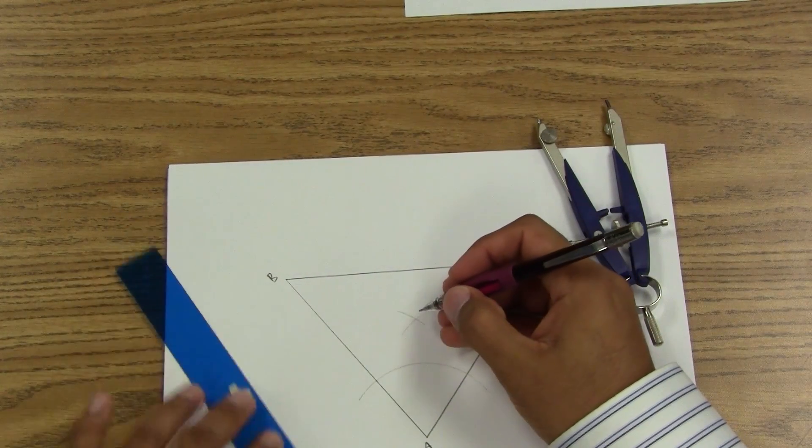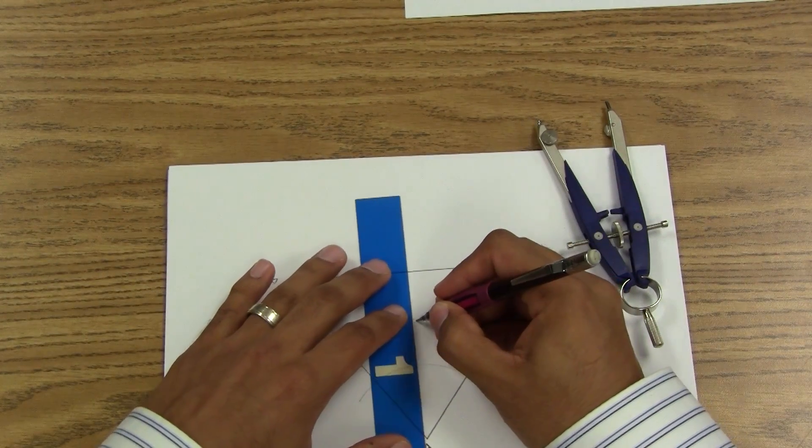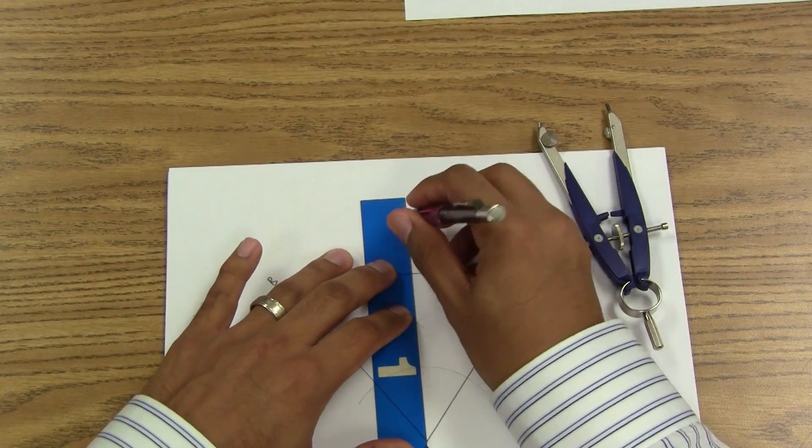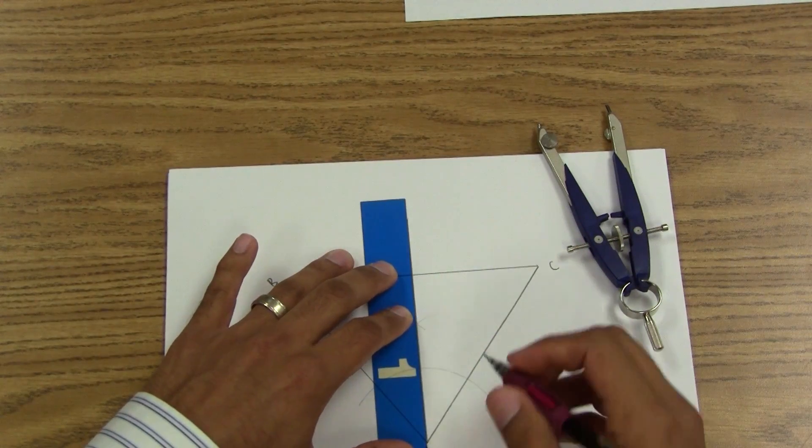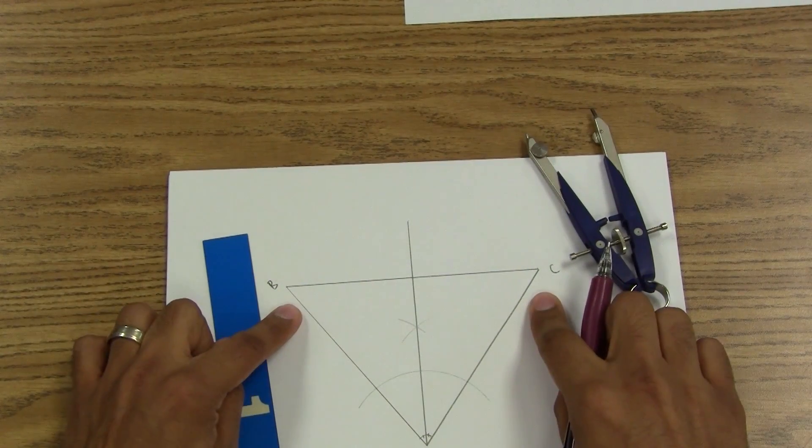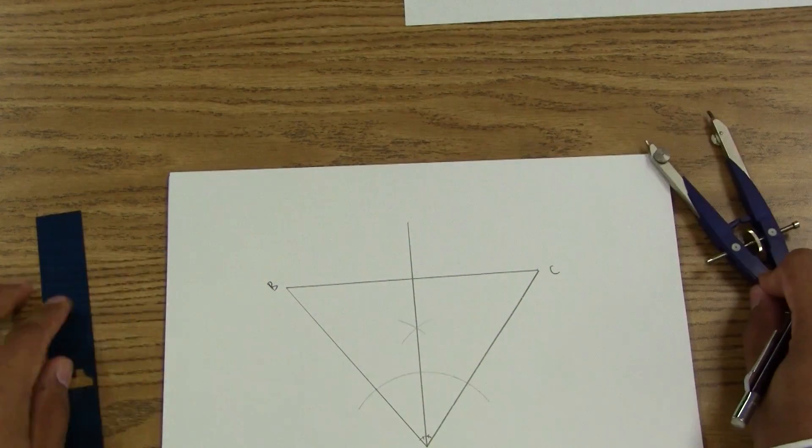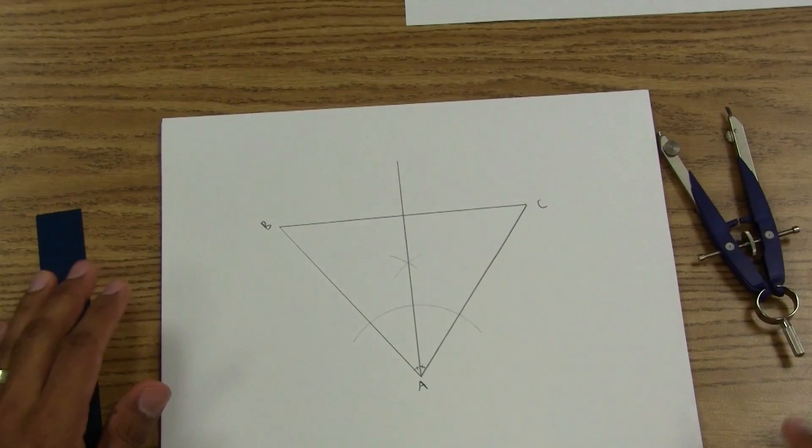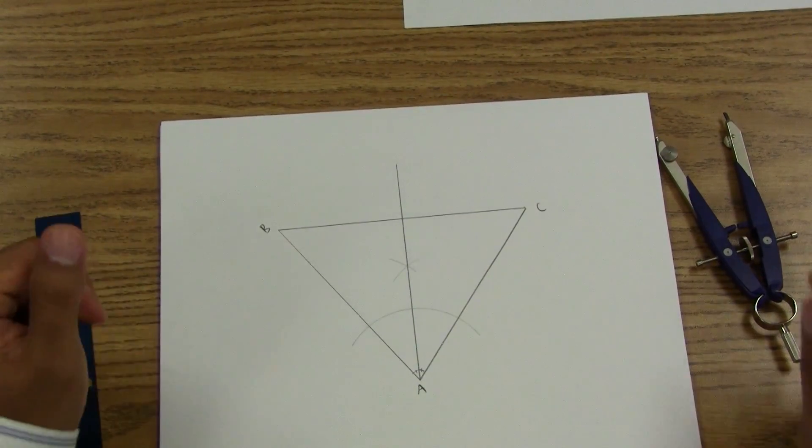So I am bisecting angle A and this is my angle bisector. Now I still have two more to do, so I'm going to go ahead and speed this up and you can pause the video.